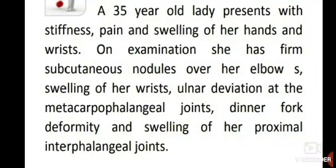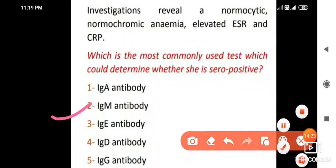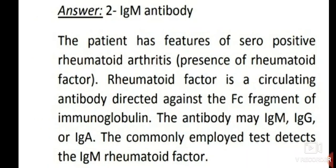A 35-year-old lady presents with stiffness, pain and swelling of her hands and wrists. On examination she has firm subcutaneous nodules over the elbow, swelling of the wrists, ulnar deviation at the metacarpophalangeal joints, dinner fork deformity and swelling of her proximal interphalangeal joints. Investigations reveal normocytic normochromic anaemia, elevated ESR and CRP. The most commonly used test to determine seropositive status is IgM antibodies. This is seropositive rheumatoid arthritis. Rheumatoid factor is a circulating antibody directed against the Fc fragment of immunoglobulins and may be IgM, IgG or IgA; the commonly employed test detects IgM rheumatoid factor.